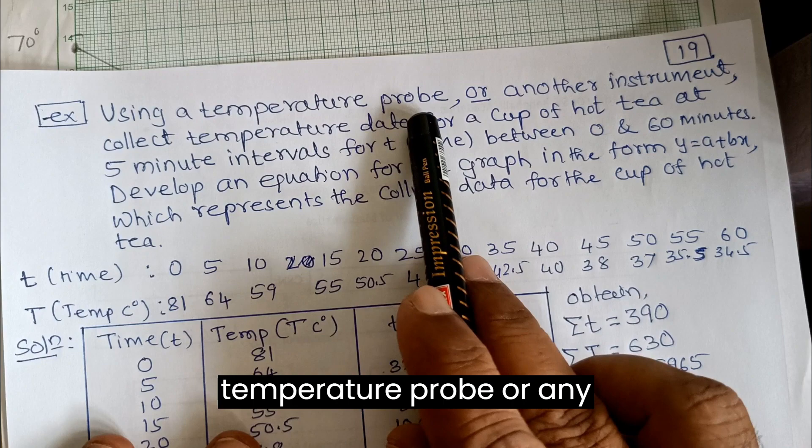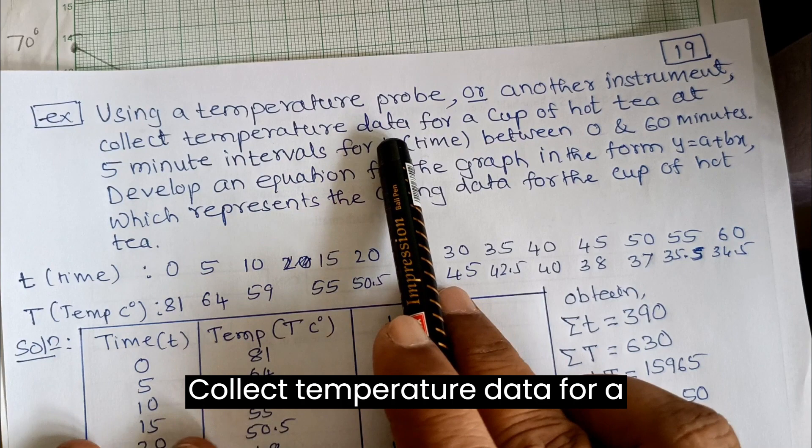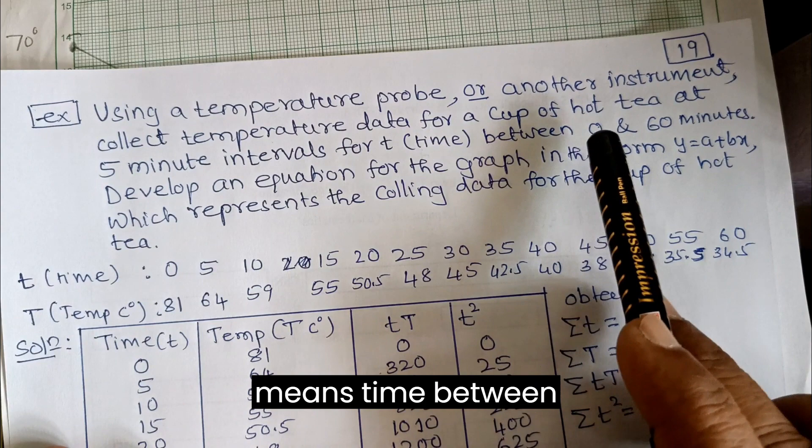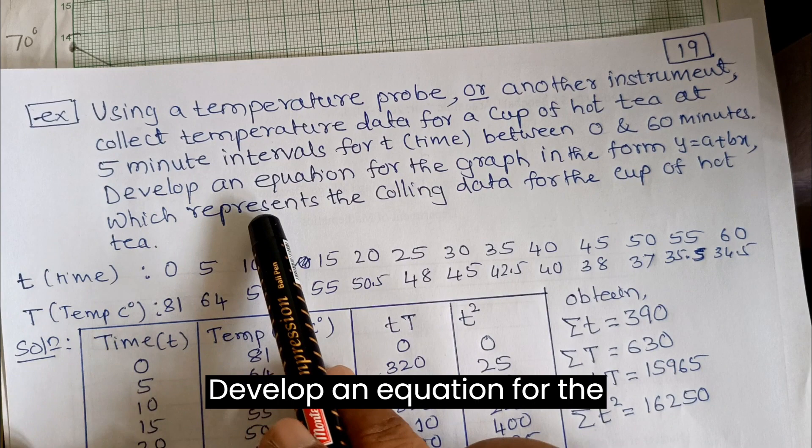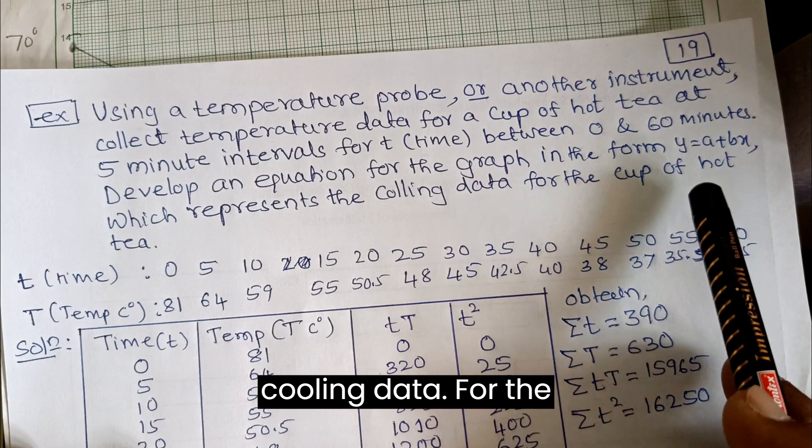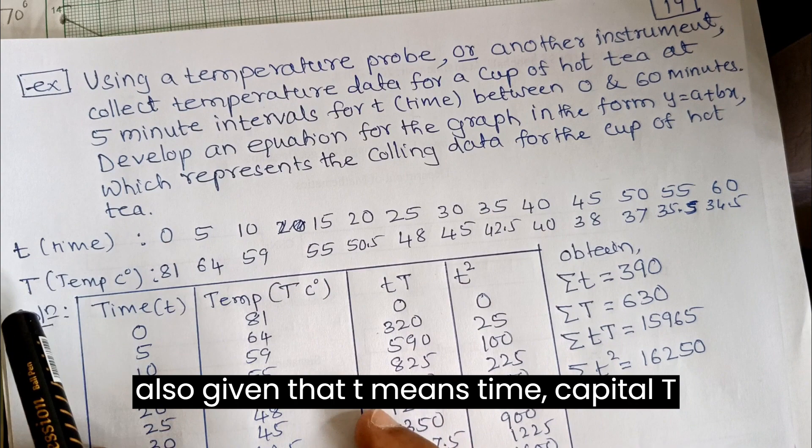Example: Using a temperature probe or another instrument, collect temperature data for a cup of hot tea at 5 minute intervals for time between 0 and 60 minutes. Develop an equation for the graph in the form y equals a plus bx, which represents the cooling data for the cup of hot tea.